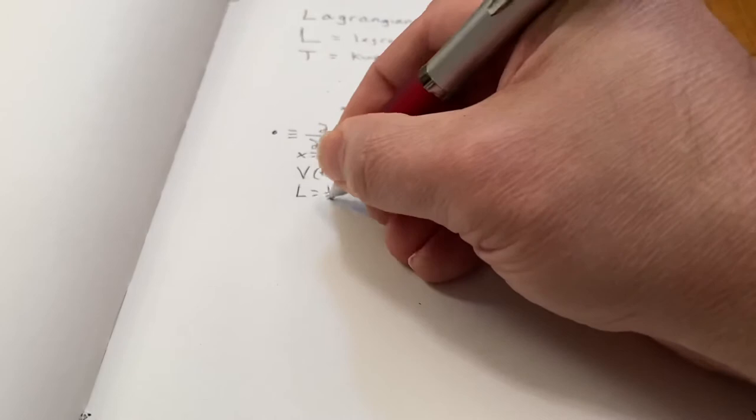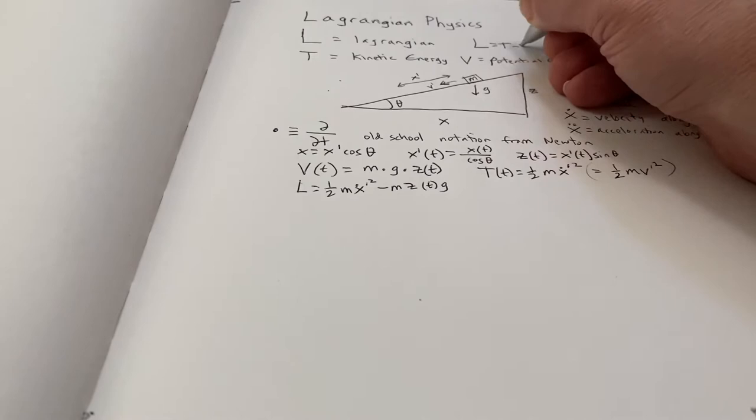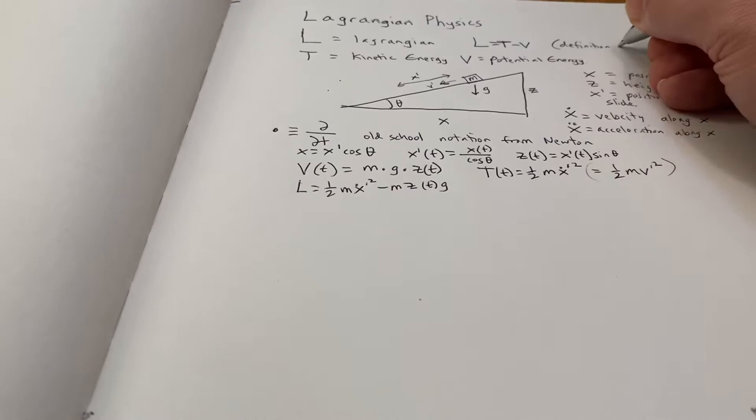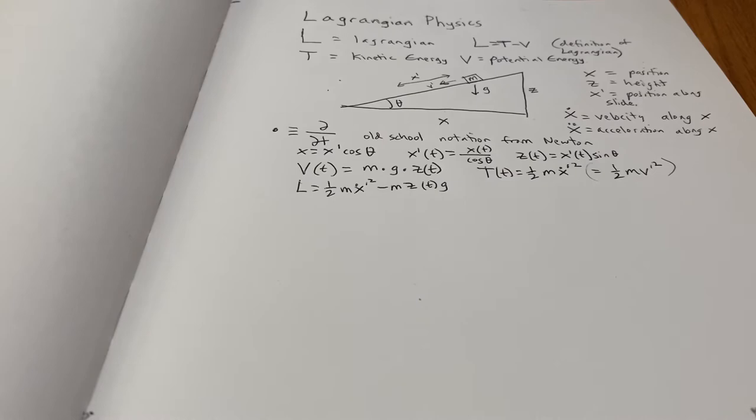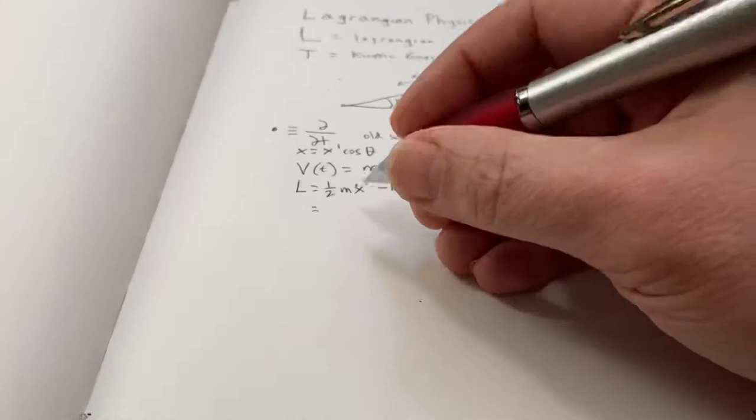So here's the Lagrangian. Now, I'll write it up here just to remind us that it's T minus V. That's the definition. It's by definition. Now there's these equations of motion that come out of the Lagrangian through something called the Lagrangian formalism. And I haven't shown you that yet, but I've shown you the prep work.